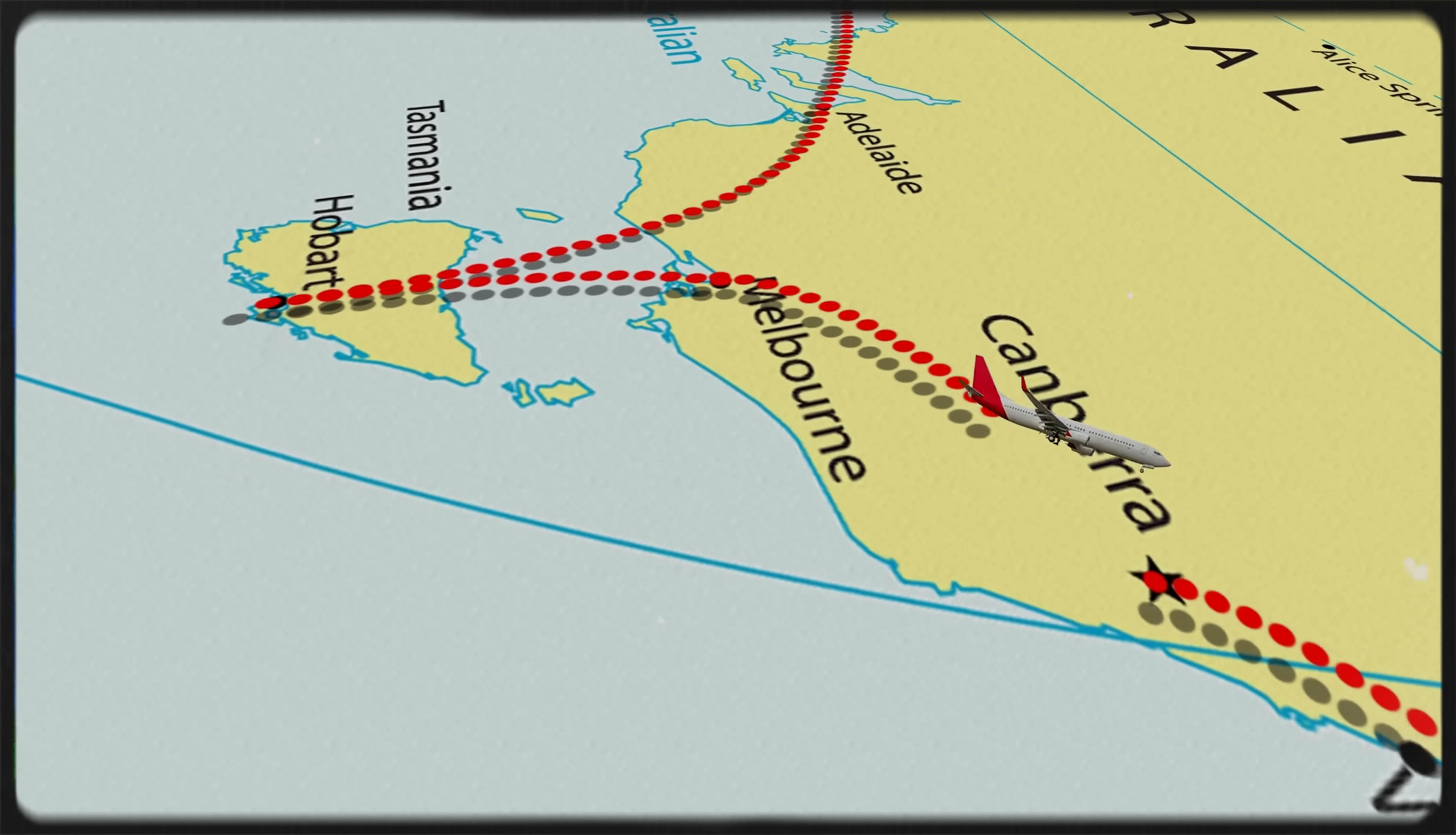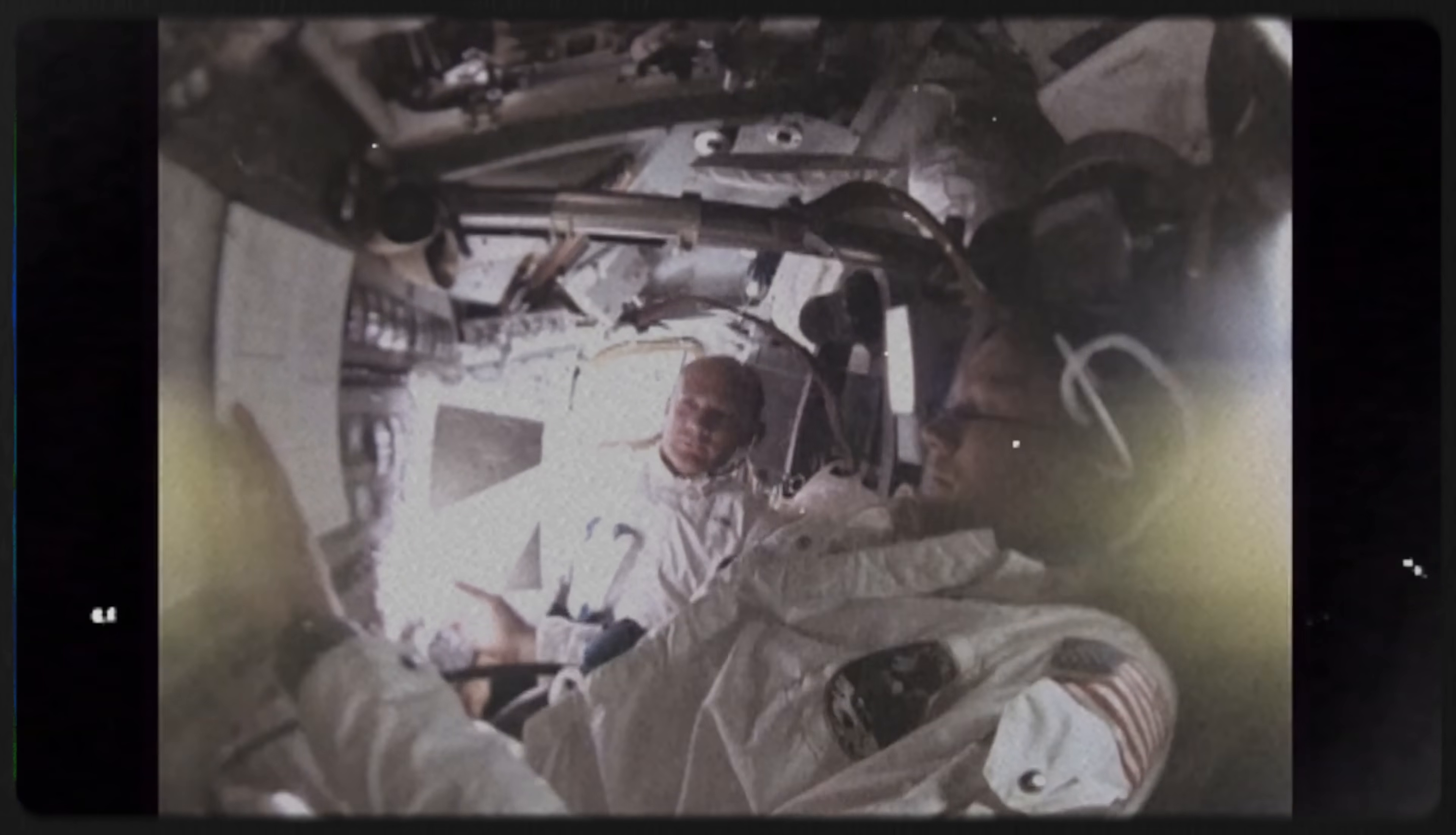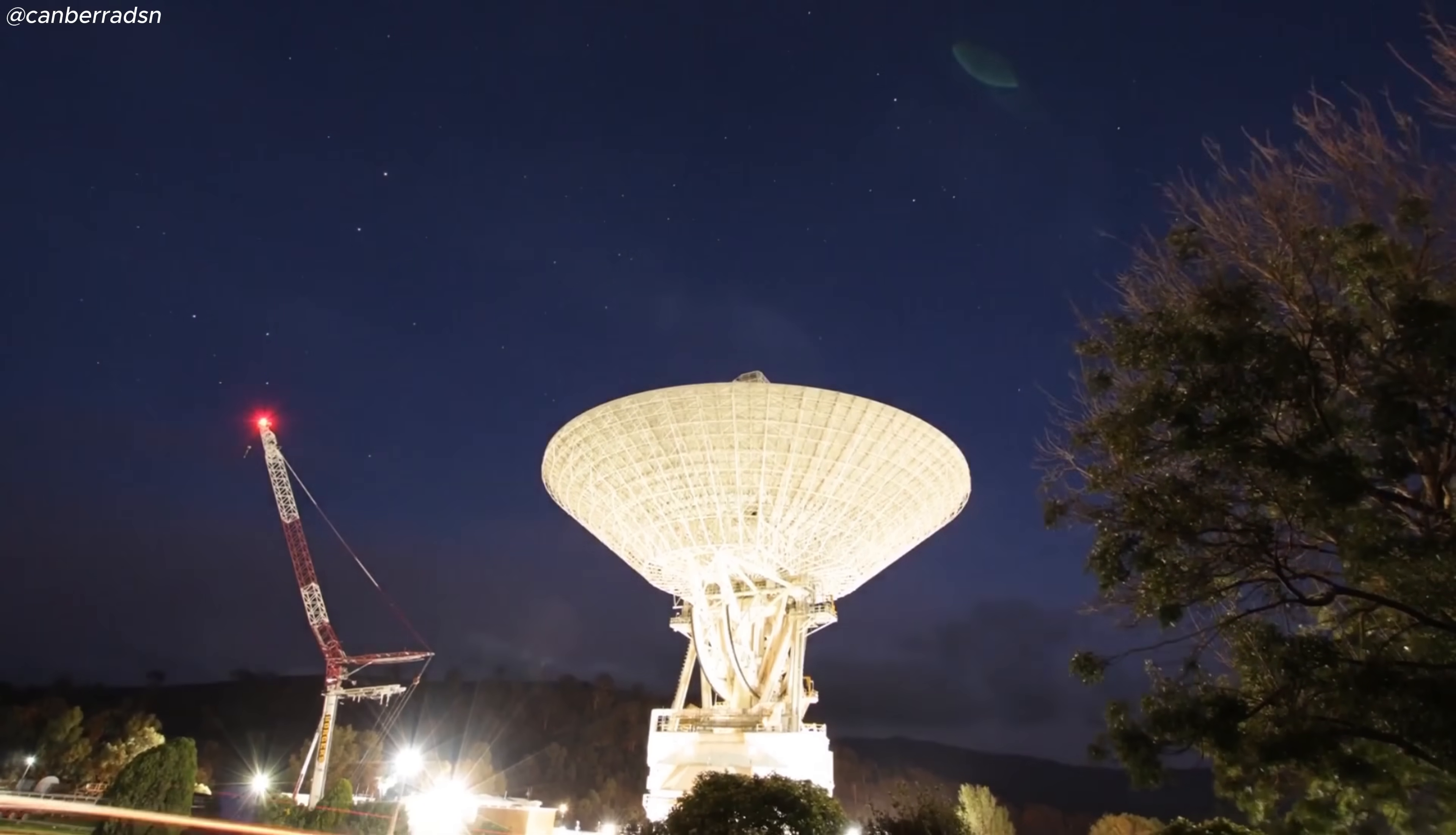On a windswept ridge outside Canberra, a relic of the space age now stands reborn. The radio telescope that once captured the first faint words from Apollo 11 has been rebuilt at NASA's Deep Space Network headquarters in Australia, a silent sentinel aimed at the stars.